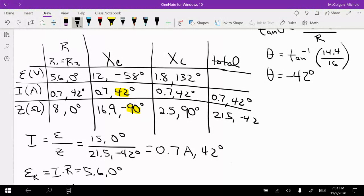And then finally here, I'm back to 15 and 0 degrees. And I can see here that these add. So that makes sense. And if I multiply these two together, 0.7 and 21.5, I'll get 15.